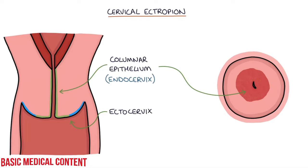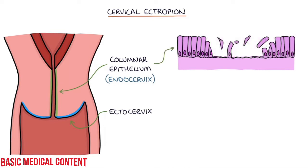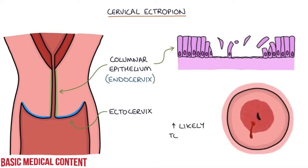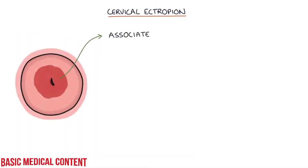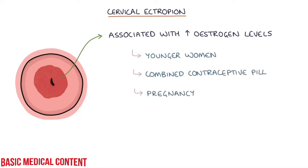This lining has a slightly different appearance to the normal ectocervix. The cells of the endocervix, which are columnar epithelial cells, are more fragile and prone to trauma. They're more likely to bleed with sexual intercourse, meaning cervical ectropion often presents with post-coital bleeding. Cervical ectropion is associated with higher estrogen levels and therefore is more common in younger women, women on the combined contraceptive pill, and also during pregnancy when there are higher circulating estrogen levels.